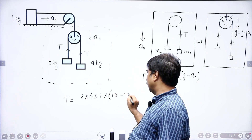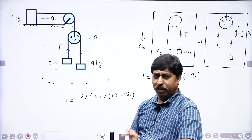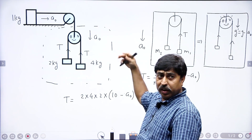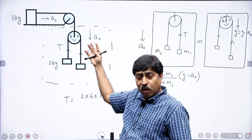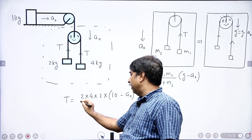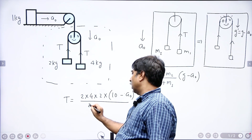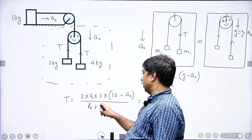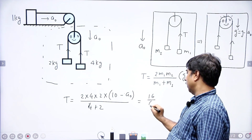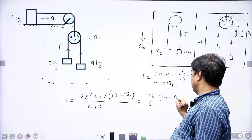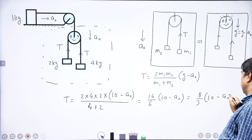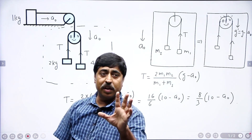Let me write it as 10 minus a₀, taking g as 10. So tension = 2m₁m₂ × g_effective divided by m₁ plus m₂. In the reference frame of the pulley, the observer finds that acceleration of free fall is 10 minus a₀. So: 2 × m₁ × m₂ × g_effective divided by m₁ plus m₂ = 2 × 4 × 2 divided by (4 + 2) × (10 minus a₀). That simplifies to 16 by 6, which is 8 by 3 times (10 minus a₀). This is the tension in this string.